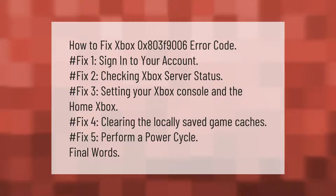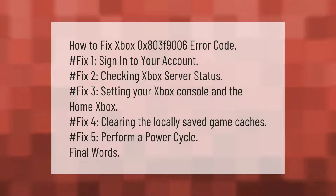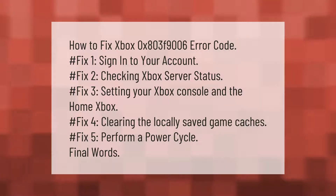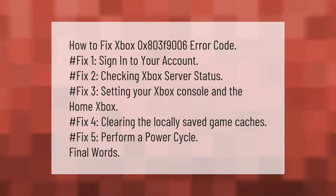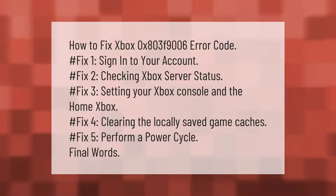How to fix Xbox error code 0x803F9006. Fix one: sign into your account. Fix two: checking Xbox server status. Fix three: setting your Xbox console as the home Xbox. Fix four: clearing the locally saved game caches. Fix five: perform a power cycle.